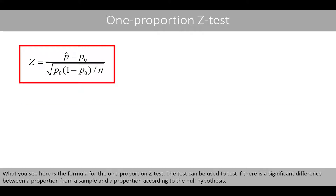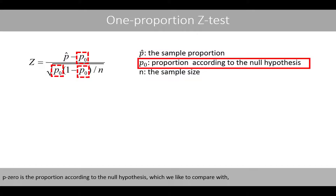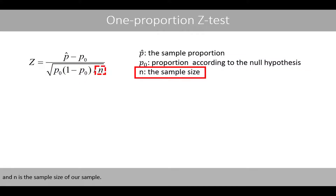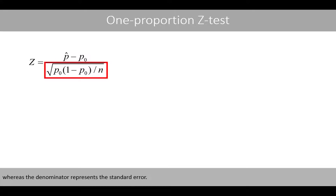What you see here is the formula for the one-proportion Z-test. The test can be used to test if there is a significant difference between a proportion from a sample and a proportion according to the null hypothesis. p-hat is the sample proportion, p-zero is the proportion according to the null hypothesis, and n is the sample size. The numerator represents the difference between our sample proportion and the proportion we like to compare with, whereas the denominator represents the standard error.